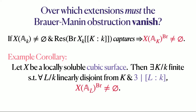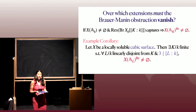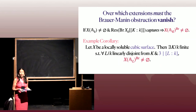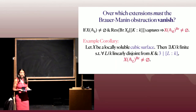Instead of a conic bundle, take a locally soluble cubic surface. Again there is a finite extension to avoid, and then for all extensions that are linearly disjoint from this and where 3 divides the degree of the extension, you get that the Brauer set is not empty. This is exactly applying the Swinnerton-Dyer result I mentioned Tuesday — that the 3-torsion of the Brauer group captures the Brauer-Manin obstruction. If you're disjoint from this fixed finite extension, the restriction generates the 3-torsion of the Brauer quotient over the extension.